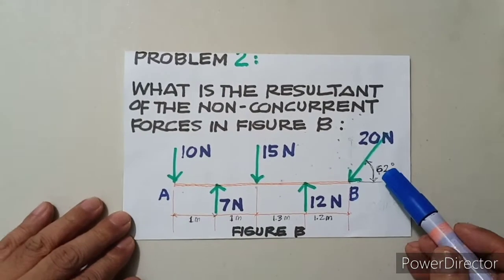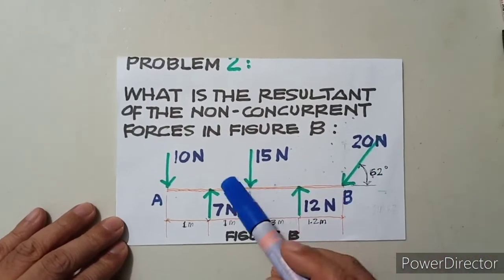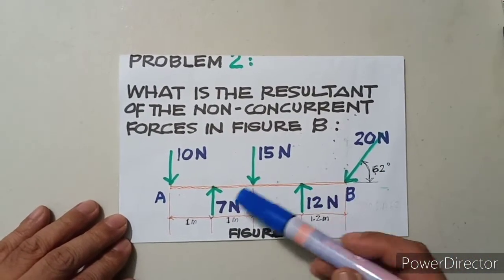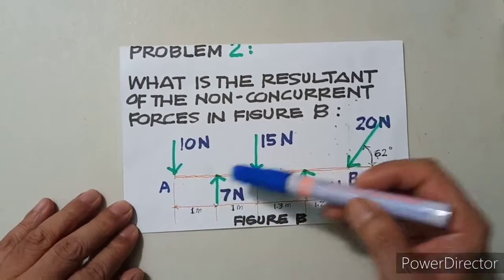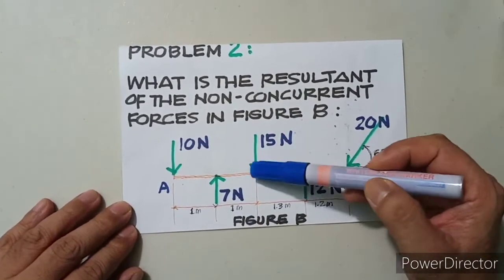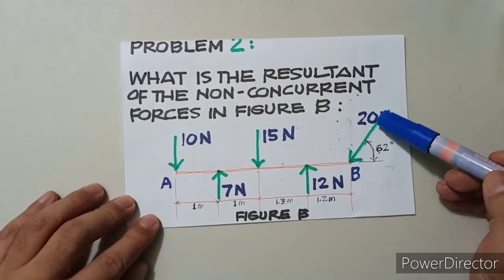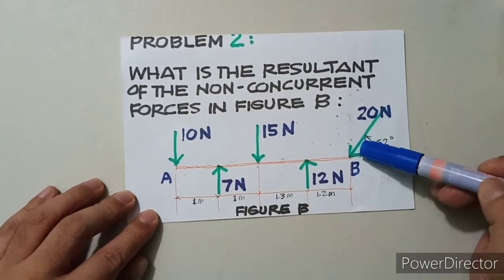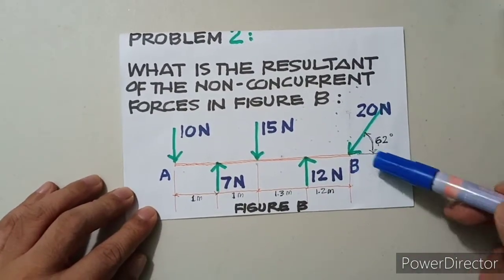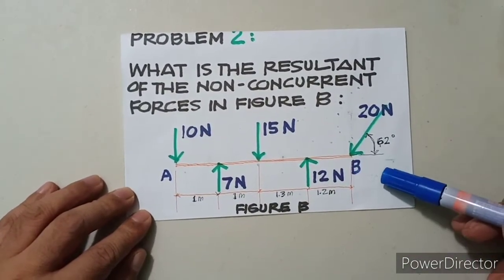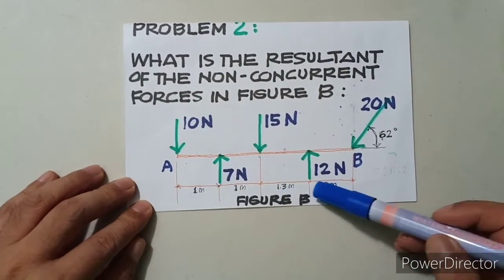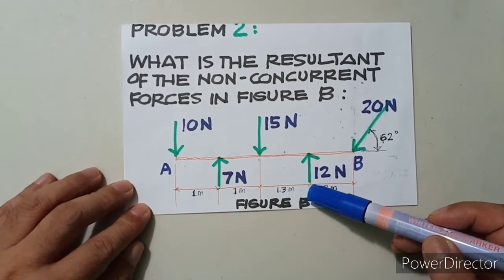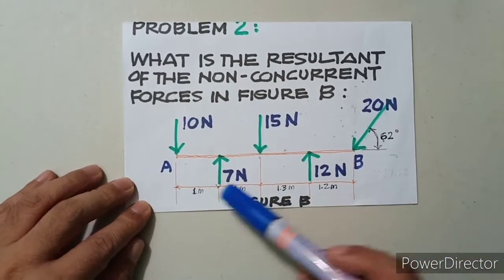For this problem, we are to solve for the resultant of the concurrent forces. We have 10N going down, 15N going down, and 20N acting downward to your left at an angle of 62 degrees. We have 7N going up and 12N going up.